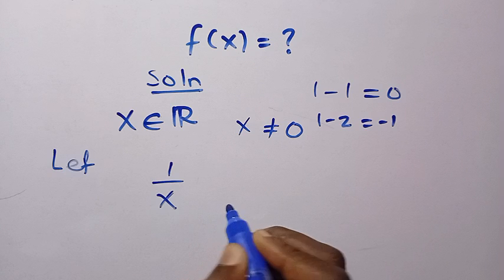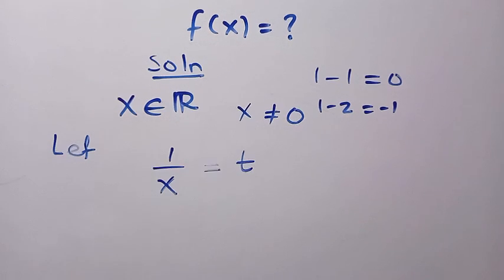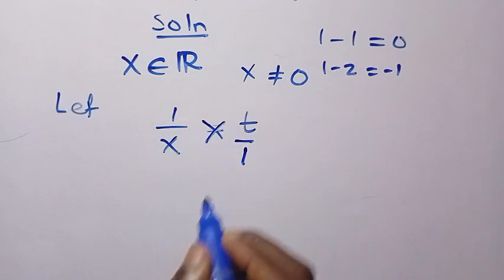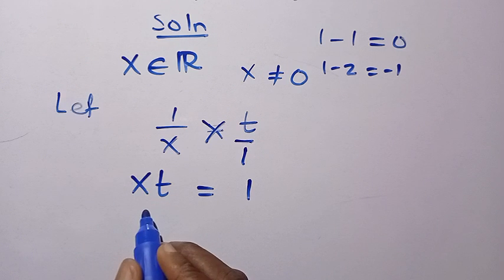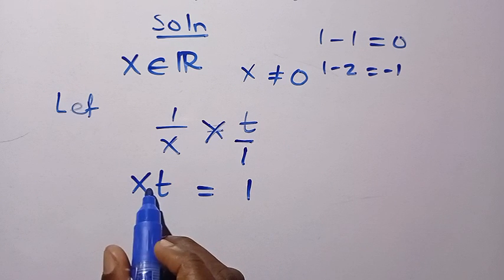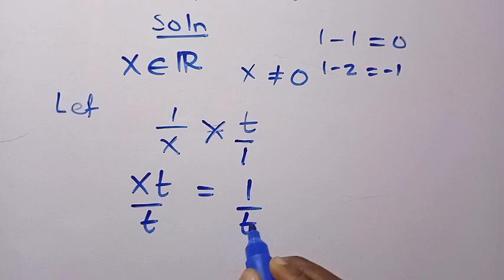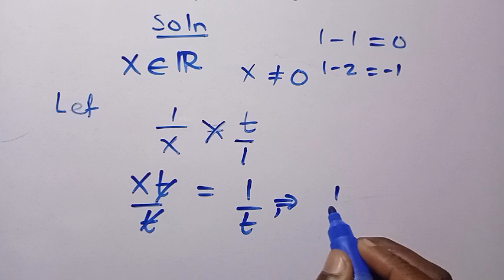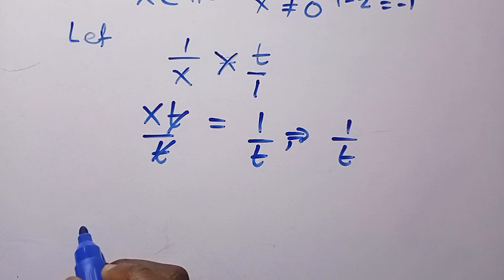To solve, we apply the substitution method. From the given function, let 1/x = t. To find x in terms of t, we cross-multiply: xt = 1, then divide both sides by t to get x = 1/t. So if x = 1/t, we can replace 1/x with t and every x with 1/t in the original equation.